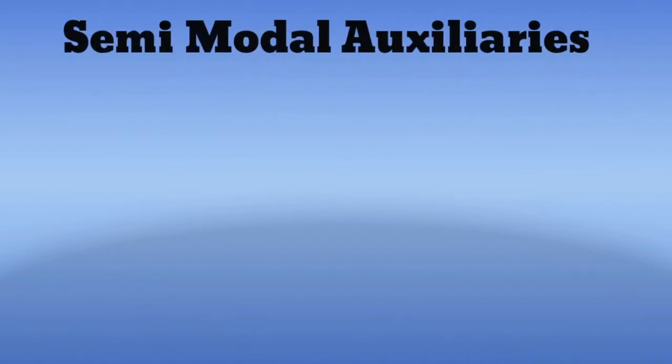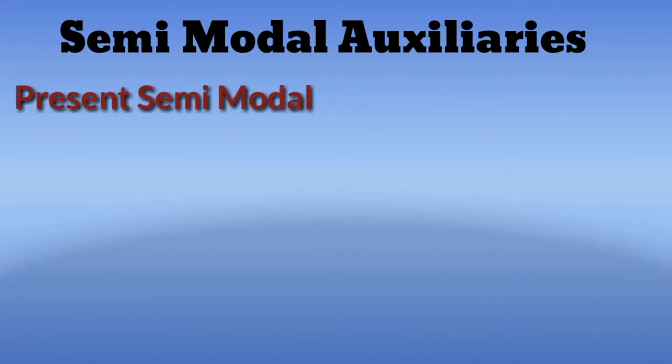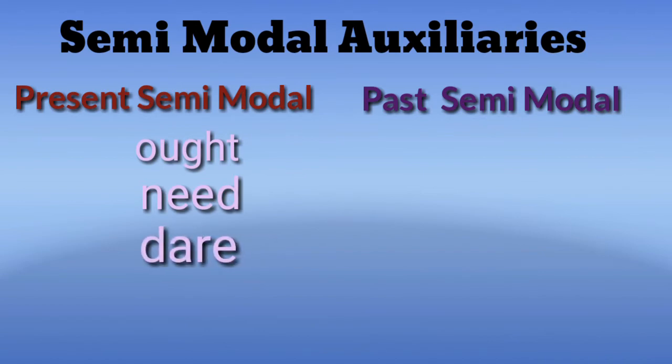The second classification of modal auxiliaries is semi-modal auxiliaries. Semi-modal auxiliaries are divided into two: the present semi-modal and the past semi-modal. Look at the table — present semi-modal auxiliaries are ought, need, and dare. We have only one past semi-modal auxiliary, and that is 'used to.' When we discuss future present and future past modals, you have to remember the following points.